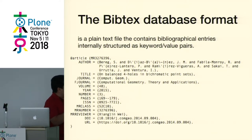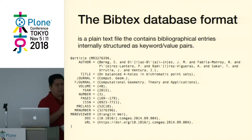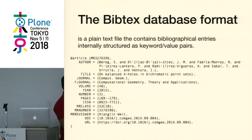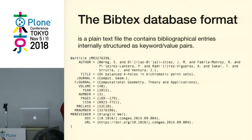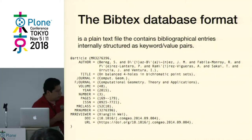A BibTeX database is basically a text file with many entries. It uses keyword-value pairs. We have different types such as article, book, proceedings, and others. Every item has an identifier and a set of keyword-value pairs like authors, title of the publication, etc.